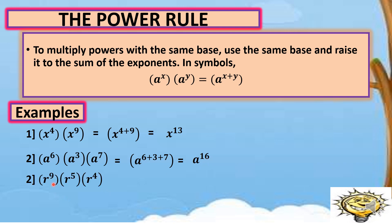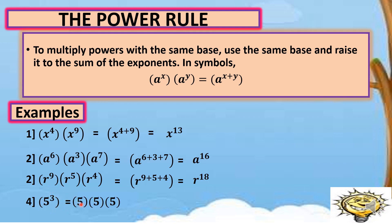For number three, r raised to 9 times r raised to 5 times r raised to 4. Same base — copy r and add their exponents: 9 plus 5 plus 4, the sum is equal to 18, so r raised to 18. For number four, we have 5 raised to 3 in expanded form. It states there are three 5's, so 5 times 5 times 5 equals 125, because 5 times 5 is 25 times 5 is 125. That is all about the power rule.